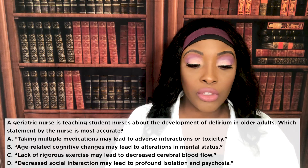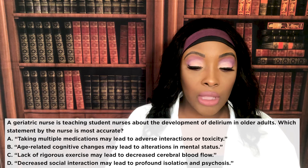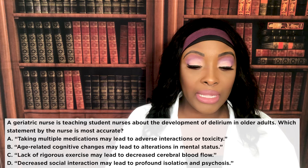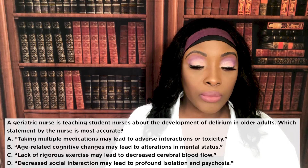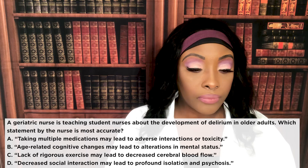Okay guys, without any further ado, let's get started. A geriatric nurse is teaching students about the development of delirium in older adults. Which statement by the nurse is most accurate? A: Taking multiple medications may lead to adverse interactions or toxicity. B: Age-related cognitive changes may lead to alterations in mental status. C: Lack of rigorous exercise may lead to decreased cerebral blood flow. D: Decreased social interaction may lead to profound isolation and psychosis.